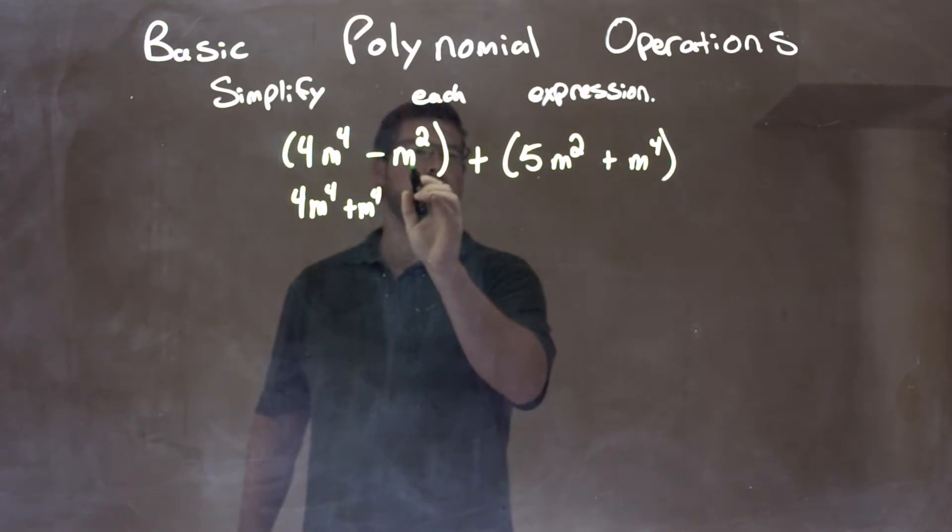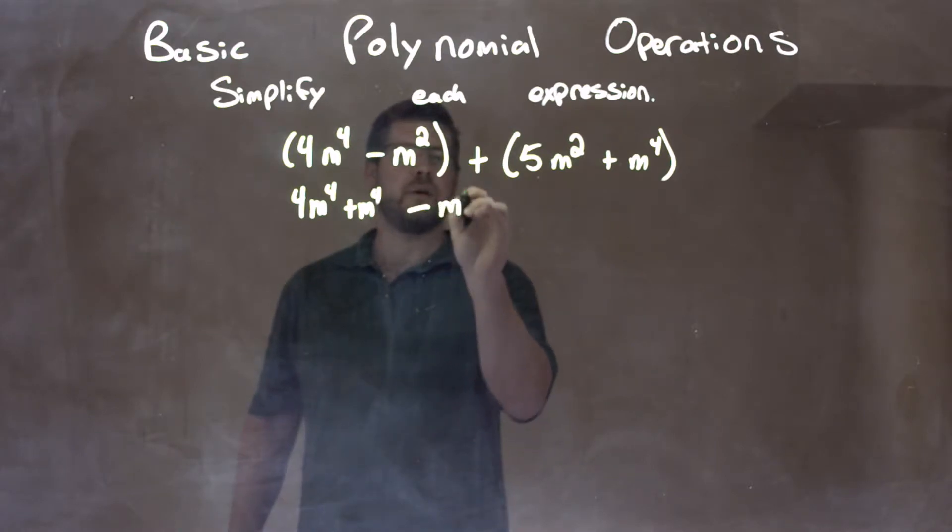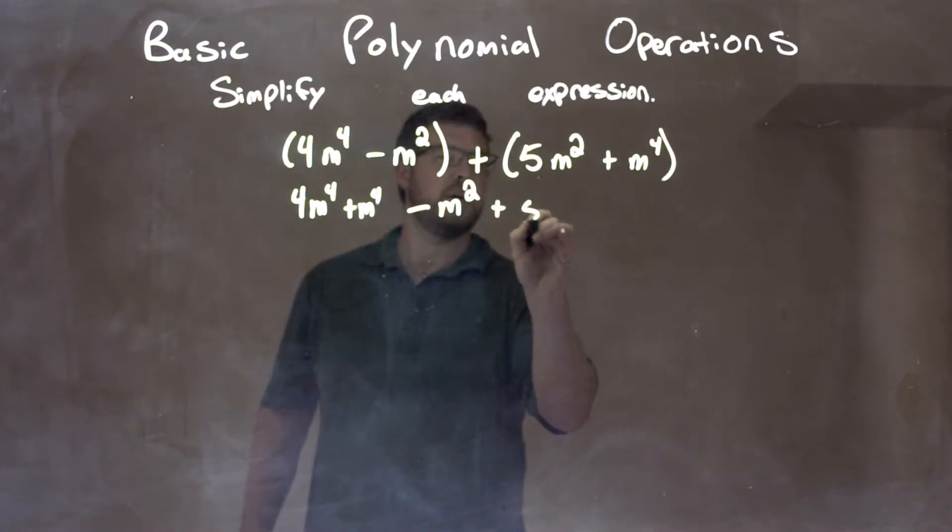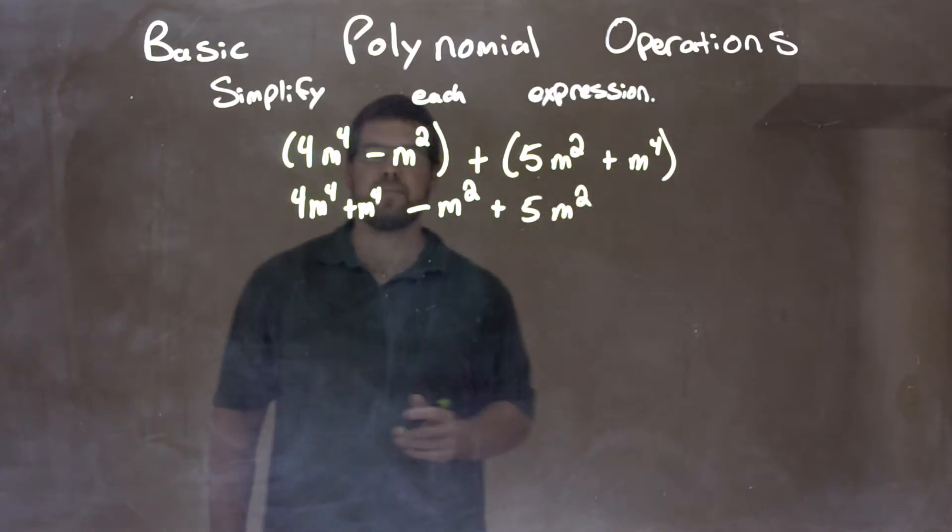Then we have our next one. The next degrees are the m squared and 5m squared, negative m squared. So we have a negative m squared, and then we have a plus 5m squared.